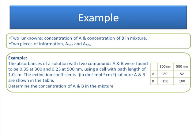The particular example is that we're told that the absorbance at 300 is 0.35 for the mixture and the absorbance at 500 is 0.23. We're given the extinction coefficients at these wavelengths, calculated from the Beer-Lambert law for the pure compounds. And we want to know what's the concentration of A and B in the mixture.